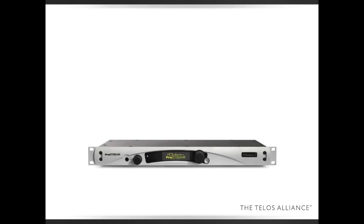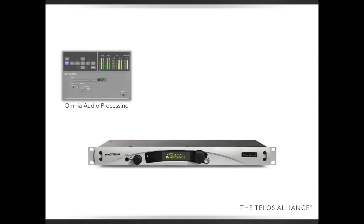Let's look at what's inside the ProStream. First of all, your audio comes in either through XLR or a LiveWire connection. The first thing it gets to is the Omnia audio processing that's built in. You can bypass it if you have some external processing, but you really want to use this processing if you can.